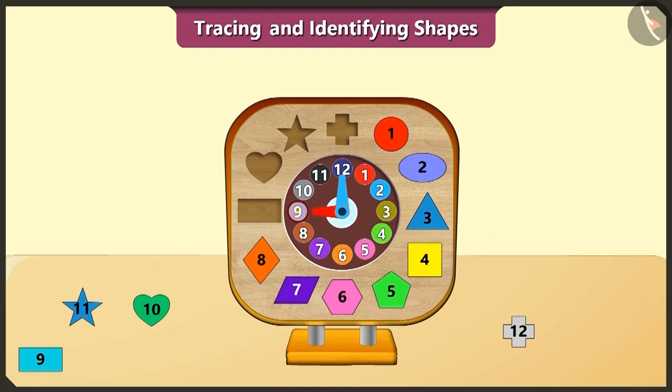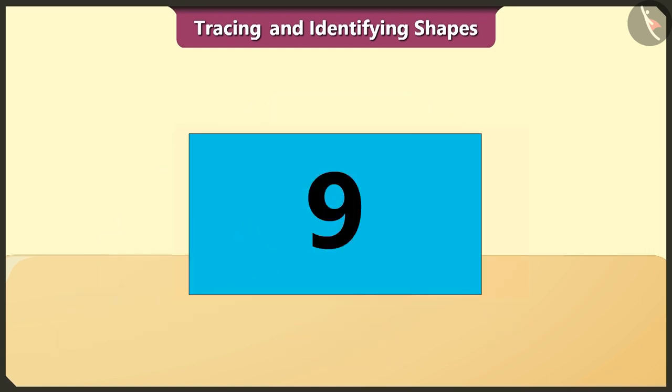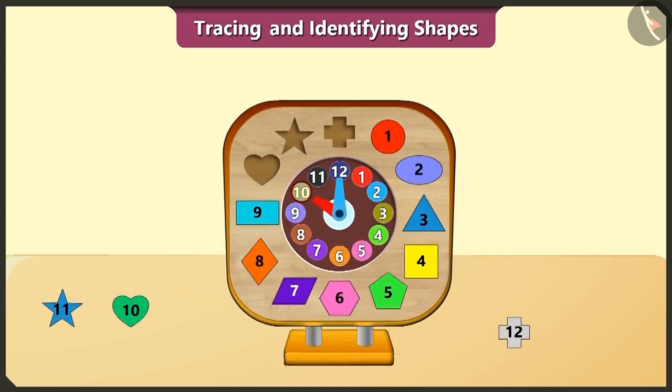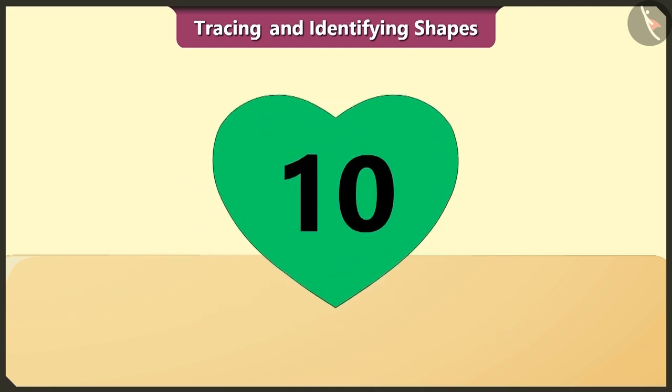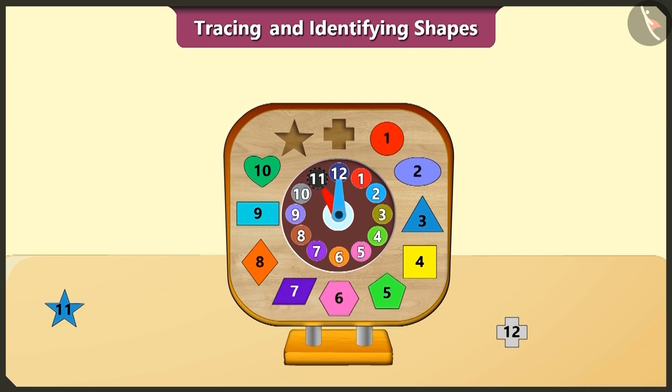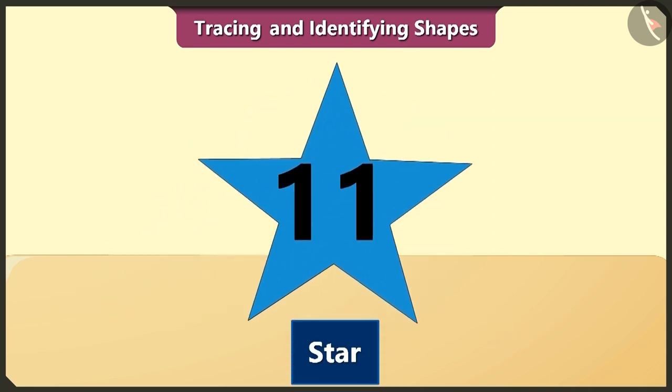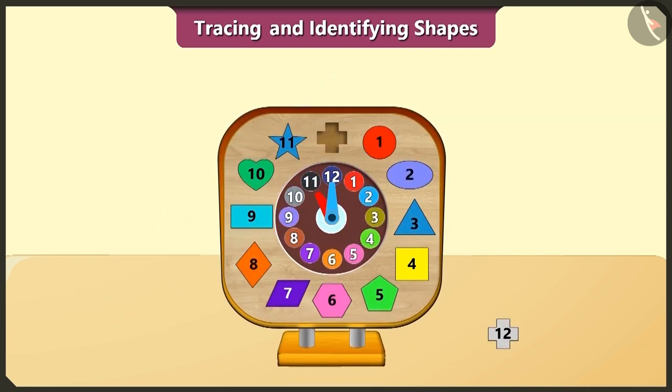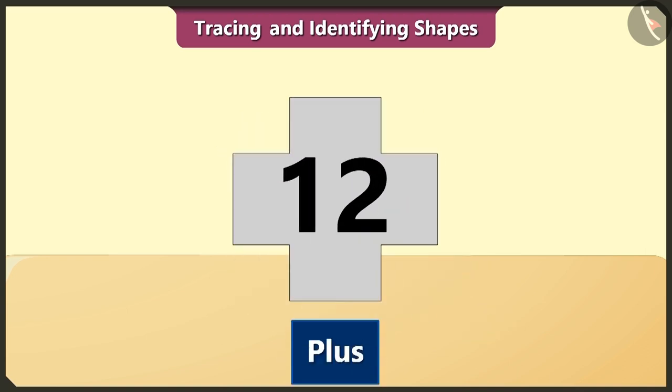And the rectangle is ninth in order here. Its opposite sides have the same length. The heart is tenth in order. The star is eleventh in order. And the plus symbol is twelfth in order.